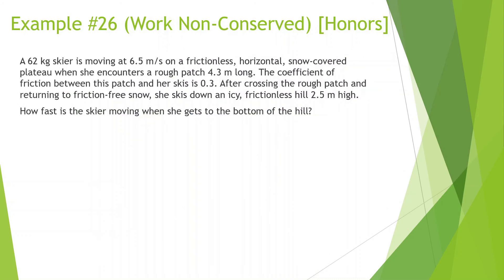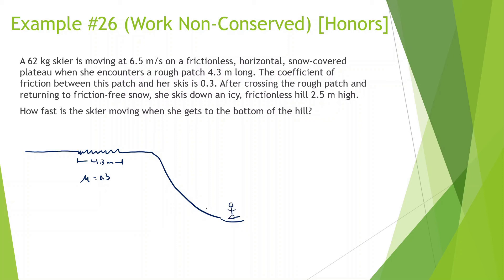Last question: a 62 kg skier is moving at 6.5 meters per second on a frictionless horizontal snow-covered plateau when she encounters a rough patch 4.3 meters long. The coefficient of friction between this patch and her skis is 0.3. After crossing the rough patch and returning to friction-free snow, she skis down an icy frictionless hill 2.5 meters high. How fast is the skier at the bottom of the hill? We know she starts at 6.5 m/s and we want to find v final.